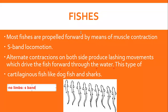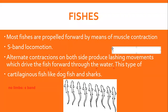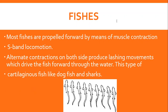Lashing movement اس لیے ہوتی ہے کیونکہ fishes کے muscles ان کی body کی sides پر ہوتے ہیں — on sides of body۔ Fish کی body پر right side پر muscle ہے اور left side پر muscle ہے۔